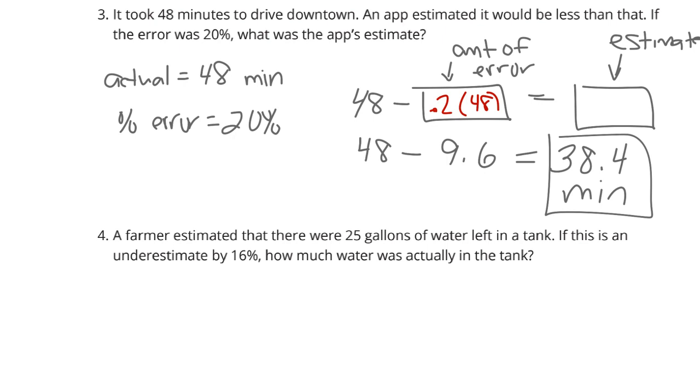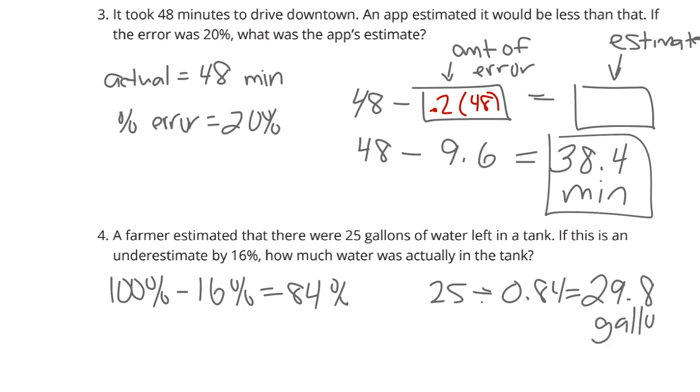Well, if it was an underestimate by 16%, if we take that 100% and subtract 16%, we're going to end up with 84%. If I take 25 gallons and divide it by that 84%, I'm going to get around 29.8 gallons that were actually in the tank.